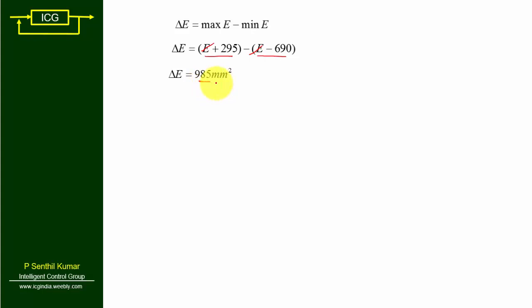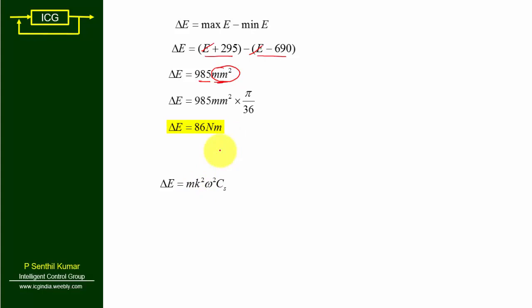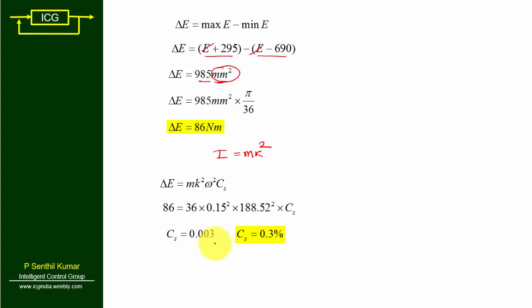The unit for del E is Newton-meter, so we convert: del E = 985 × (π/36) ≈ 86 Newton-meter. Using del E = I·ω²·Cs and I = Mk², with mass = 36 kg, k = 0.15 m, and omega = 188.52 rad/s, we solve for Cs. Rearranging gives Cs = 0.003, or 0.3%. This is the coefficient of fluctuation of speed for the given problem.